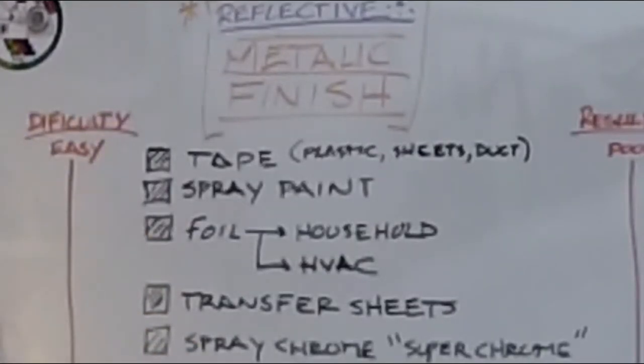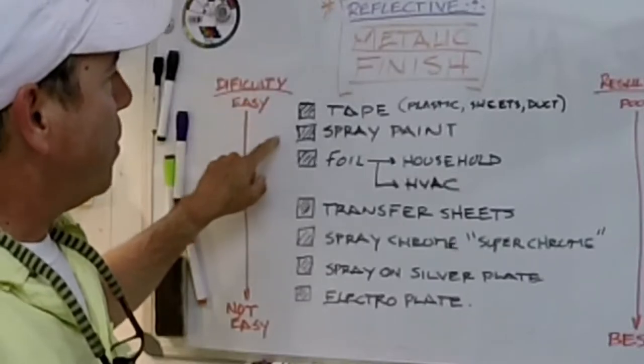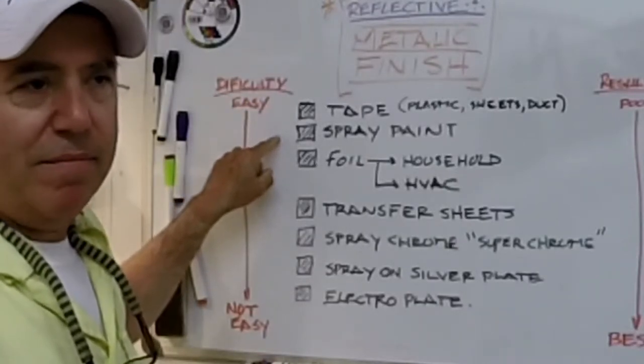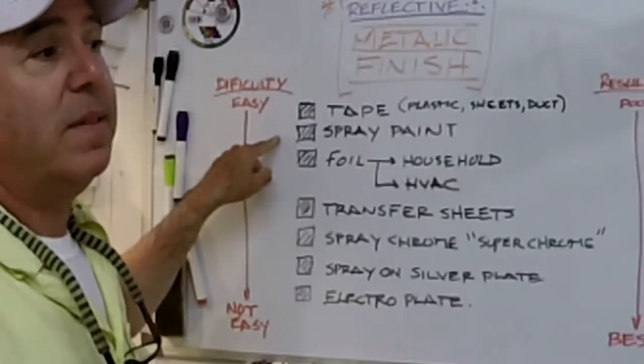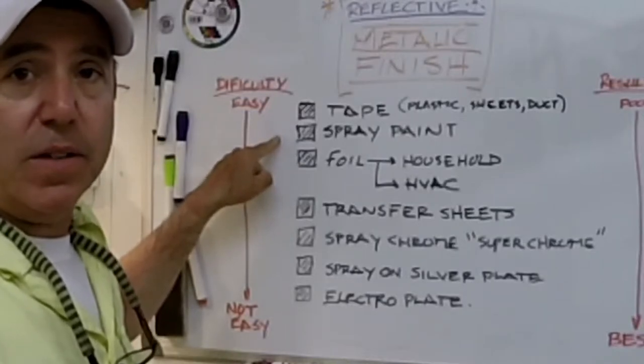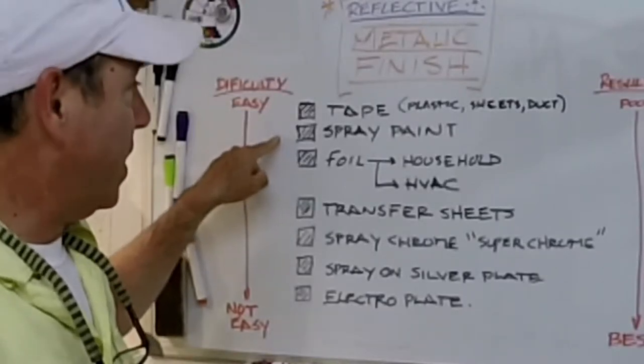It's kind of involved but we'll start off with tape - plastic tape, vinyl tapes, plastic sheeting, duct tape. There's some pretty shiny duct tape out there. Spray paint - I know what you're thinking, it doesn't work very well - well actually I found a spray paint that does a pretty doggone good job and I'll show you what it is.